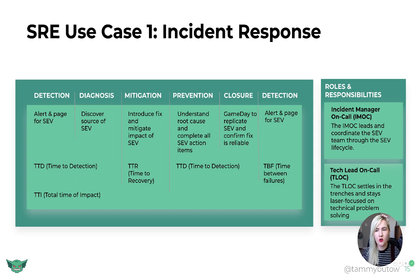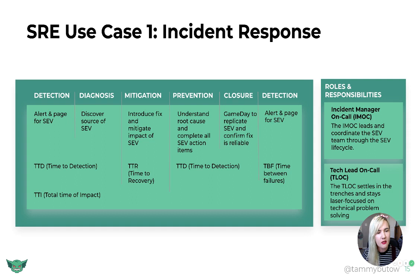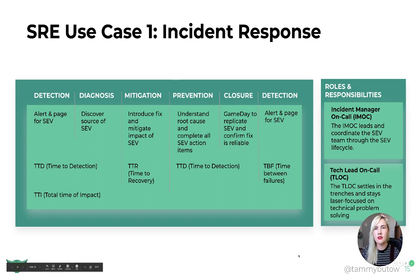That was the root cause. While it was a batch job, somebody had created it many years ago, nobody knew where it was coming from, and that person had left the company. There are a lot of things we need to dig into to make sure that doesn't ever happen again. That's why we do a post-mortem and complete all high-priority SEV action items — I recommend doing it within one month. Next we have closure: this is where we run a game day to replicate the SEV and confirm a fix is reliable. We also track detection again — time between failures, TBF — and when we look at the entire timeline it's called total time of impact, TTI. The two roles needed are the Incident Manager On-Call (IMOC) and the Technical Lead On-Call (T-lock). The T-lock settles in the trenches and stays laser-focused on technical problem solving, and the only person who can communicate with the T-lock is the IMOC.